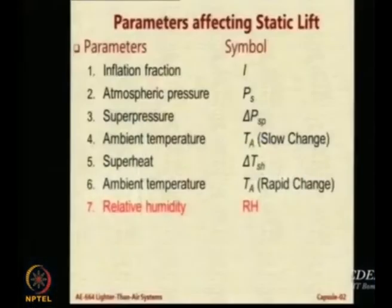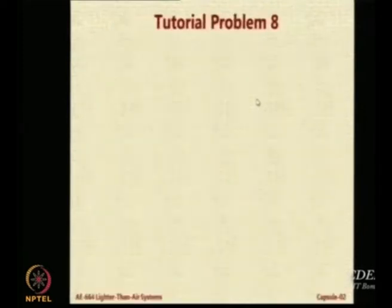Superheat is the heating of the envelope beyond the atmospheric temperature due to radiation acting on the envelope. We saw that it can be modeled as an increase in temperature. Today we look at the remaining factors, and the effect on the lifting gas volume of the air. Before we start, let us brush up a few things by doing some problems that will explain the concepts more clearly.